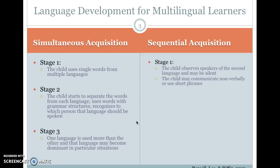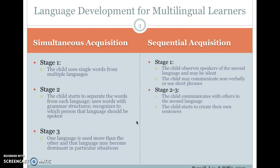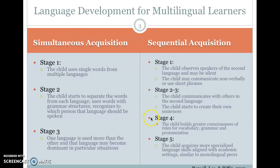The first stage is that the child observes speakers of the second language and may be silent. This is often called a silent period. It can last six months to a year because they're taking everything in. The child may communicate non-verbally or use short phrases. In the next couple of stages, you'll see the child communicating with others in the second language and starting to create their own sentences.